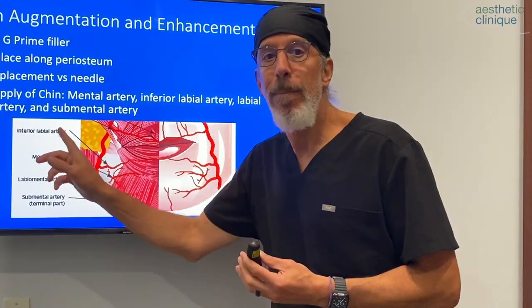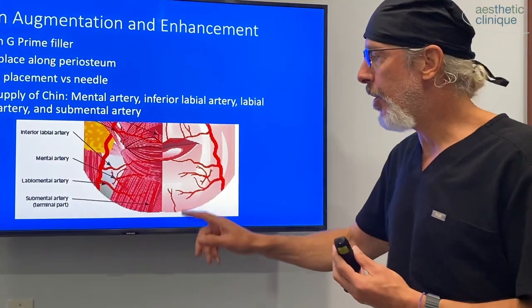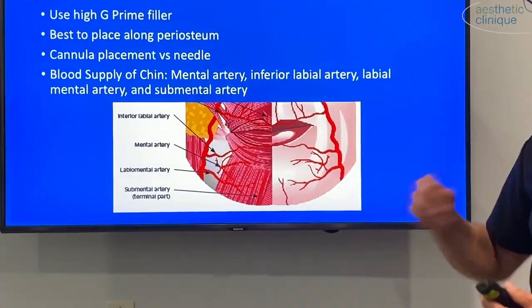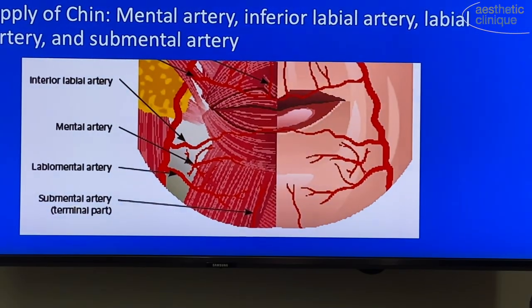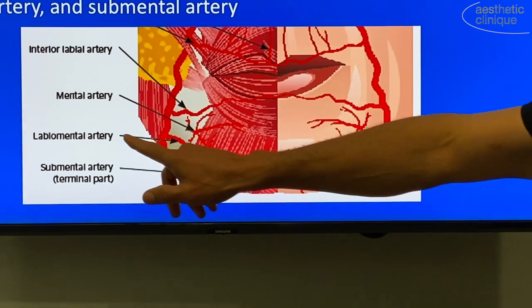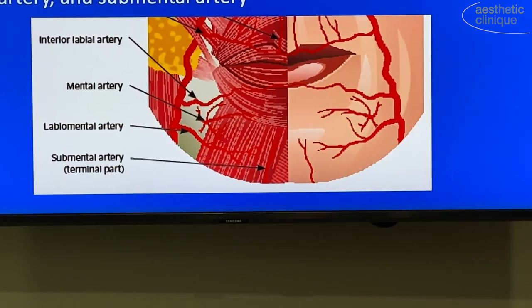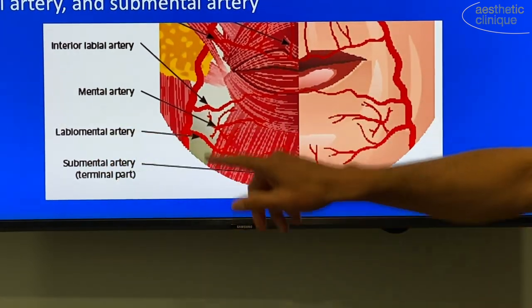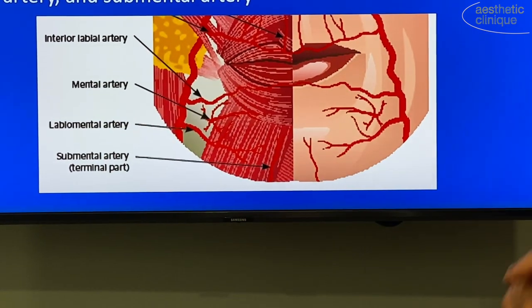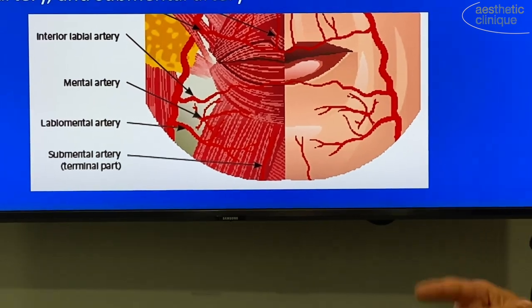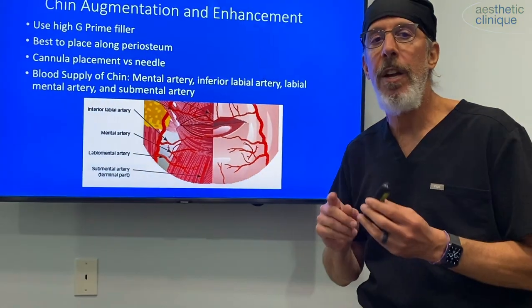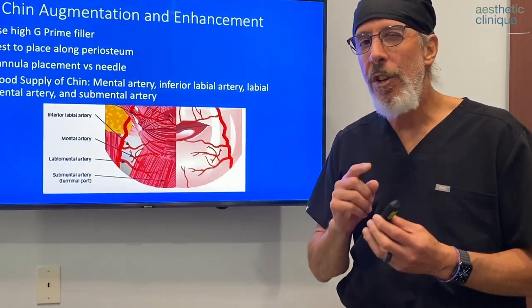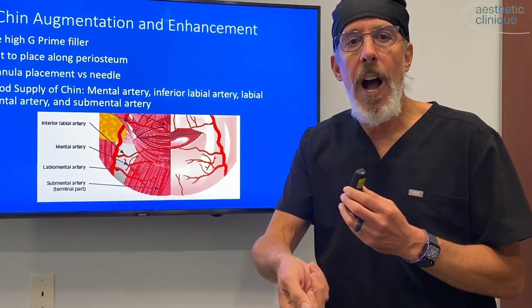The blood supply to the chin is also pertinent. You have the submental artery coming up from below, running usually close to the midline. You also have the labial mental artery, a lesser-known artery. One of your main arteries is the mental artery, as well as the inferior labial artery. So all those arteries are pertinent, and using a cannula will probably make you safer.